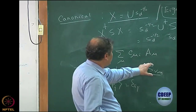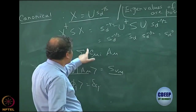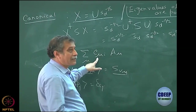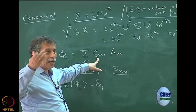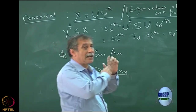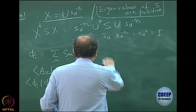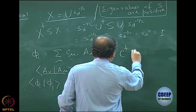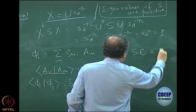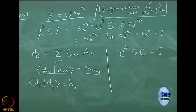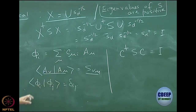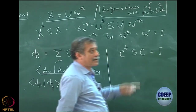If the atomic orbitals were also orthonormal, then you know that the coefficient would have a very simple relation — that C†C would have been an identity matrix, which is what happens when you expand one orthonormal function in another orthonormal set. But this is no longer true here. In fact, what is true is that C†SC equals the identity matrix. You should be able to prove this as a practice problem.